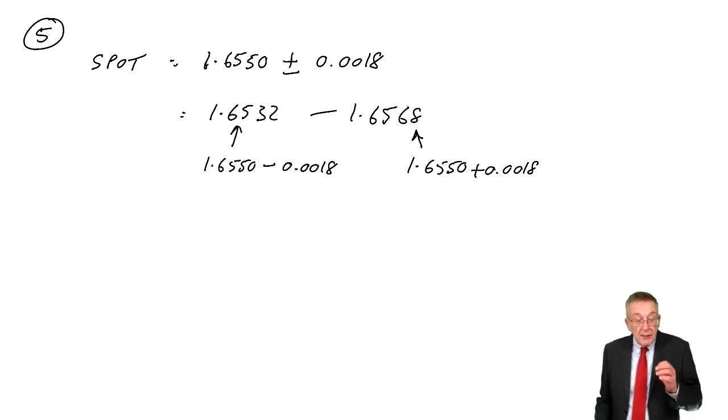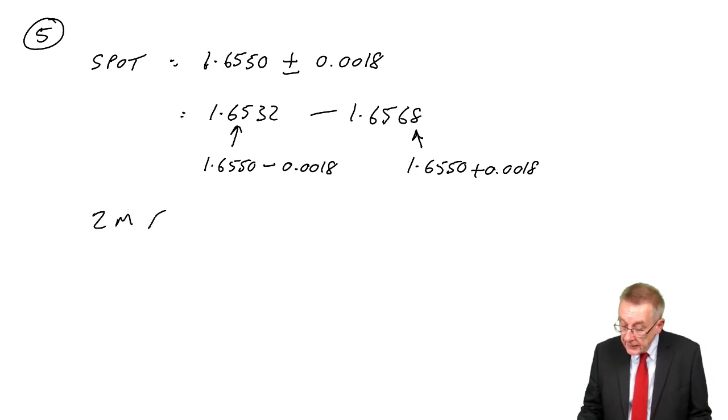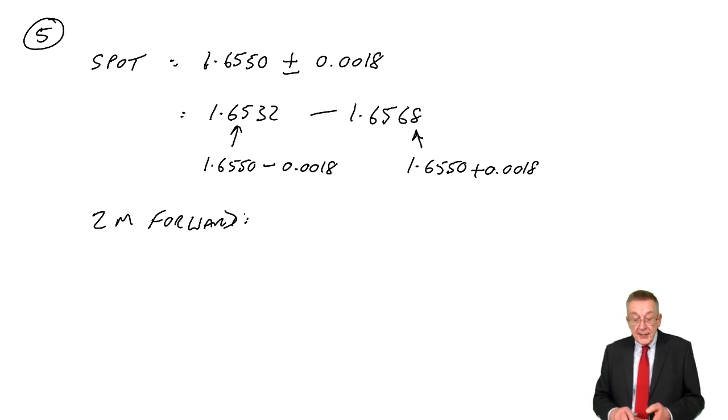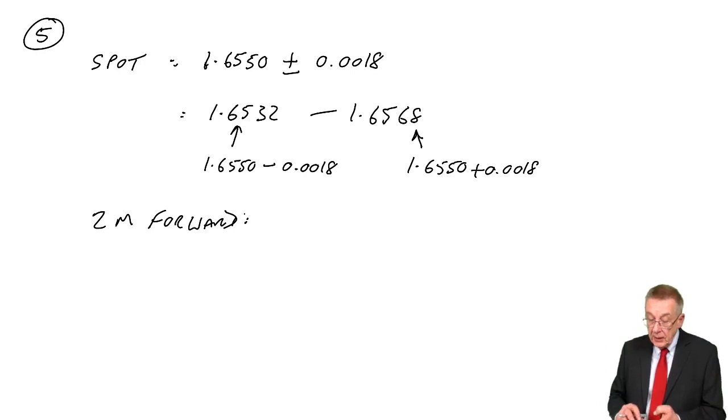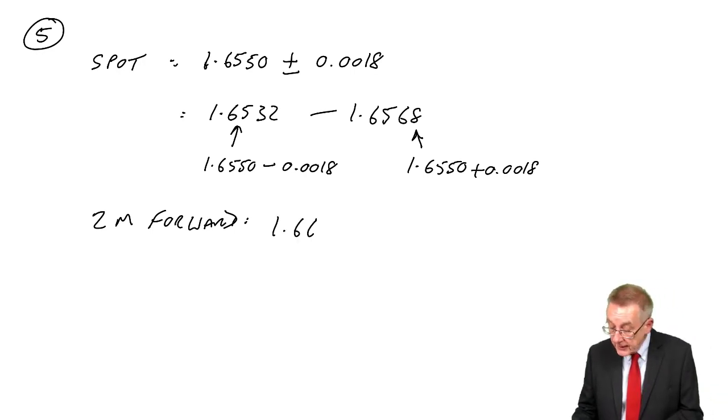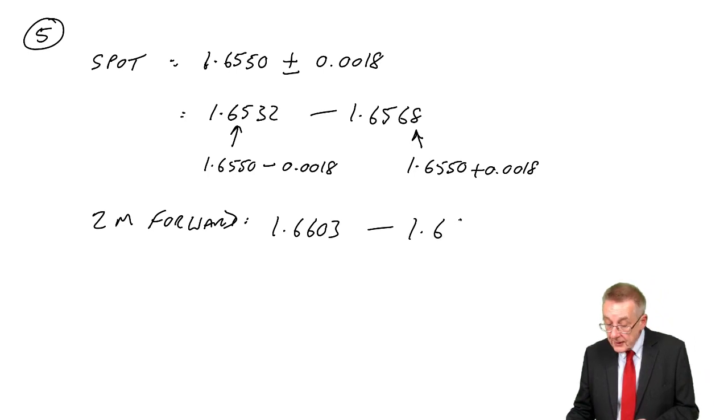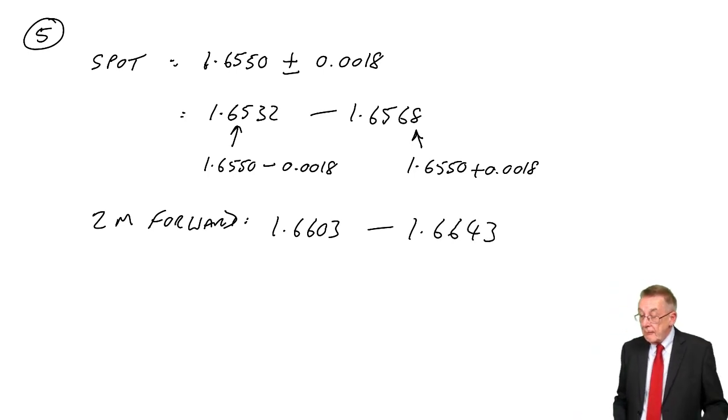The spot rate is of no relevance here. We need the forward rate. In exactly the same way, the two month forward rate is 1.6623 minus 0.0020. So the lower rate is 1.6603. The higher rate, 1.6623 plus 0.0020, is 1.6643. So that's the rate they're quoting for converting in two months' time.